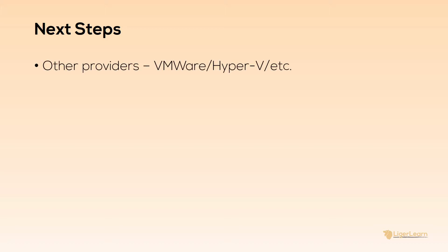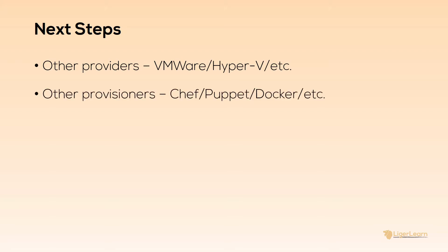Although we covered a lot in the course, there's still a lot more you could investigate to become a true Vagrant expert. We only used VirtualBox as a provider in this course, but you could explore how to use Vagrant with other providers such as VMware. We only used the basic shell provisioner, but you could use one of the other provisioners that make use of tools such as Chef, Puppet, or Docker. Another thing you'll definitely want to explore is the ecosystem surrounding Vagrant plugins, which add additional functionality to Vagrant and may come in handy for your particular use cases in the future.